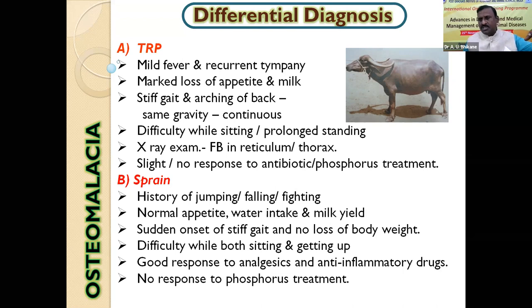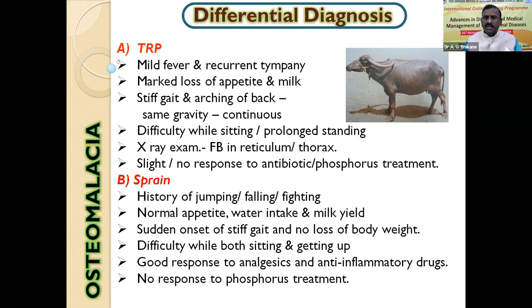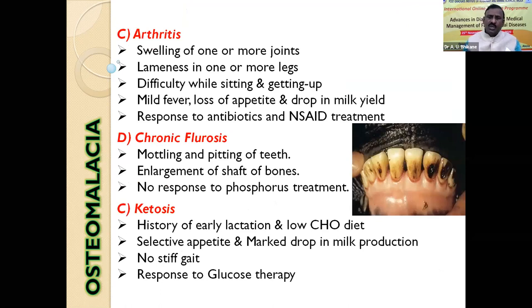This is the important feature: in osteomalacia, the animal faces difficulty while getting up; in TRP, the animal faces difficulty while sitting down; in sprain, difficulty in both sitting and getting up. In sprain, appetite and milk production are unaffected, whereas in osteomalacia they are slightly affected, and in TRP they are markedly affected. Arthritis is easy to diagnose — joints are swollen and sore, the animal faces difficulty while both sitting and getting up because of joint pain. There will be fever and loss of appetite and drop in milk, with response to antibiotics and NSAIDs.